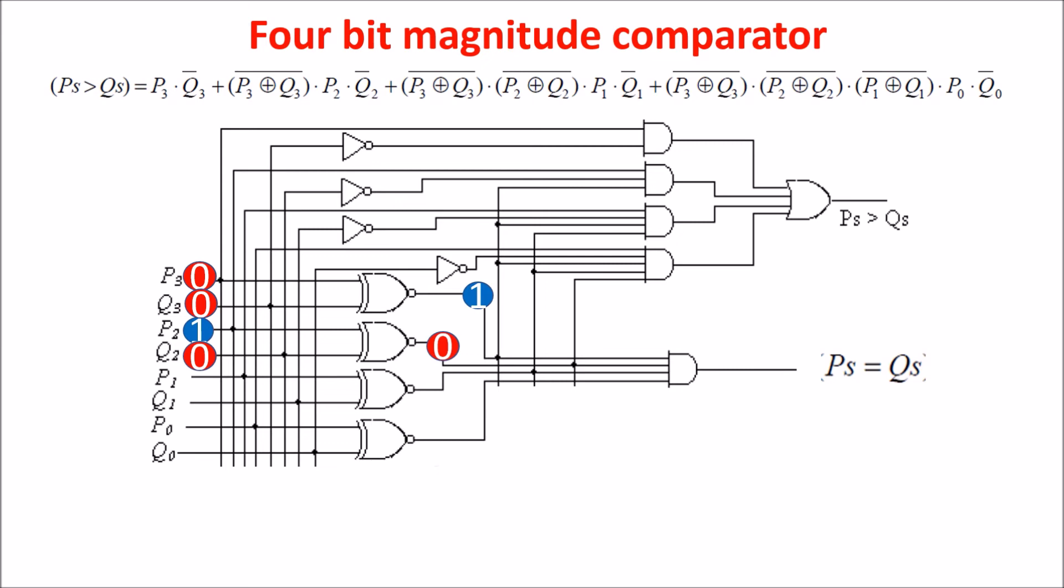So the final AND gate is 0, stating that the two numbers are not equal. Being P3 is 0, the output of the AND is 0 as well.